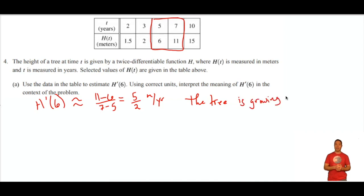And they also want us to interpret the meaning. So what's the meaning? Well, that's the rate of change of the height of the tree. So I'm going to write down the tree is growing, or you could say the height of the tree is increasing by 5 over 2 or 2.5. That's the instantaneous rate of change at t equals 6, which is in its sixth year.